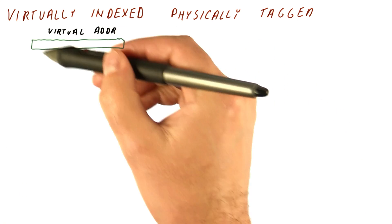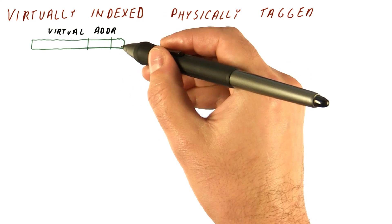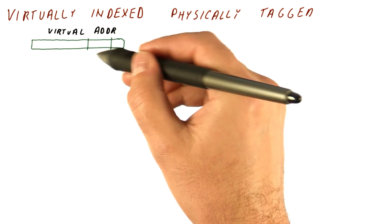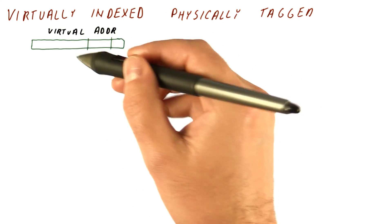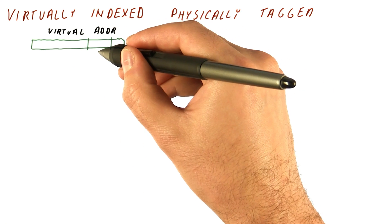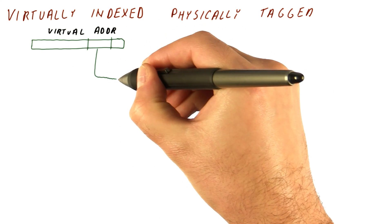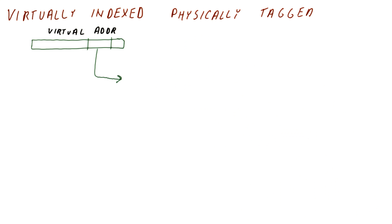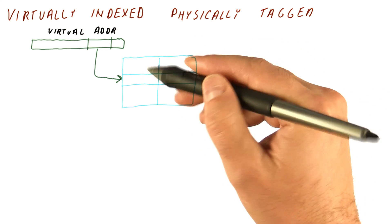We start with the virtual address. We break it down into the cache offset, index, and tag, but we don't use the tag. We do use the index bits from the virtual address to find the set that we want in the cache.